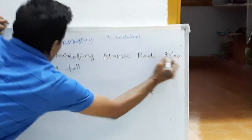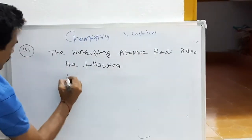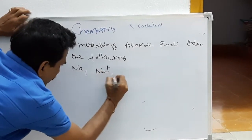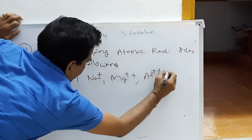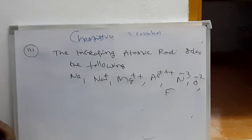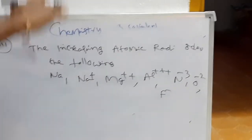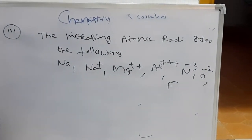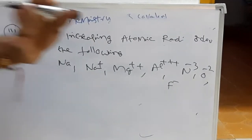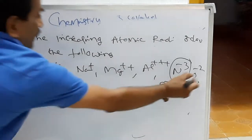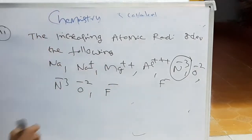The next question asks for the increasing atomic radius of the following species: Na⁺, Mg²⁺, Al³⁺, N³⁻, O²⁻, F⁻. The increasing atomic radius goes from lower to higher. Among these, which has the least atomic radius and which has the most? A small trick: if the negative charge is more — that is N³⁻, then O²⁻, then F⁻ — these have the same number of electrons.